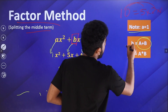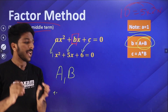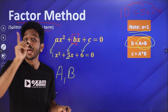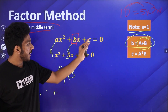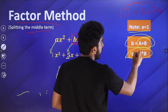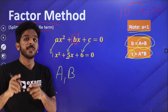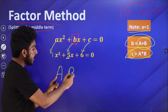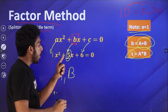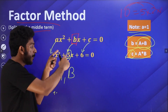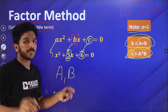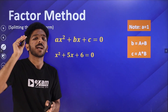What is the rule? If we split b into A and B, then A plus B must equal 5 — that's one rule. And A multiplied by B must equal c, which is 6. So A and B add to give b, and multiply to give c.